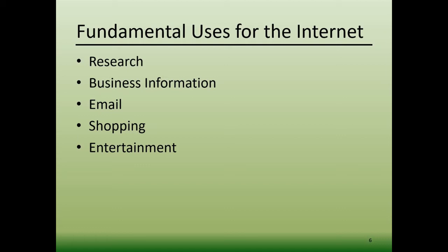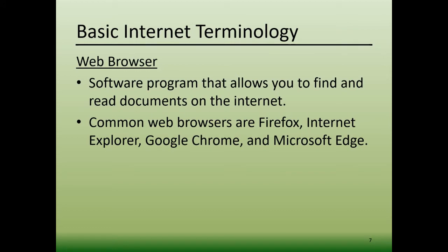In order to more easily understand how to navigate the internet, there are some basic terms that may be helpful. First, there's a web browser. This is a software program that allows you to find and read documents on the internet. Common web browsers are Firefox, Internet Explorer, Google Chrome, and Microsoft Edge. A lot of these web browsers also function as search engines.